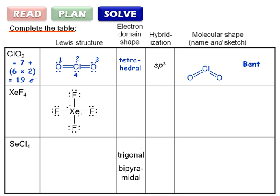Move on to xenon tetrafluoride. The Lewis structure has already been drawn for us here, so just count up the electron domains. There are 6. This corresponds to an octahedral electron domain shape.